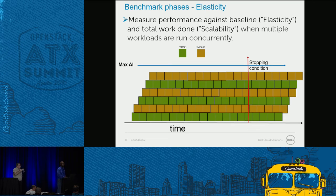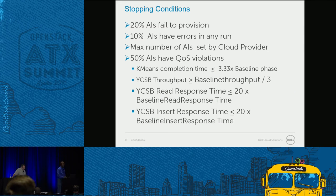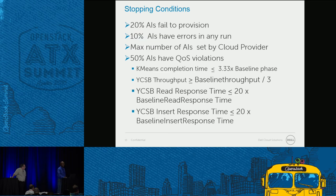Stopping conditions: if 20% of application instances fail to provision, the benchmark stops. If 10% of them have run failures of any nature, it stops. Or it stops because you wanted only a certain number of application instances — the maximum ones. Or if 50% of them have quality of service violations, which include: K-Means running longer than a predefined period, YCSB throughput going below a certain threshold, and YCSB read/write latencies exceeding predefined limits.